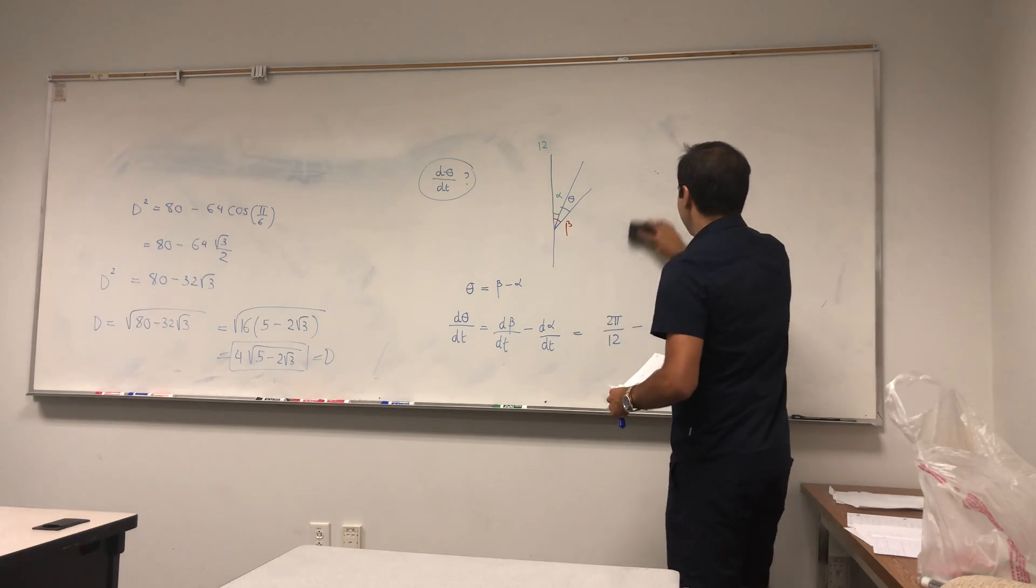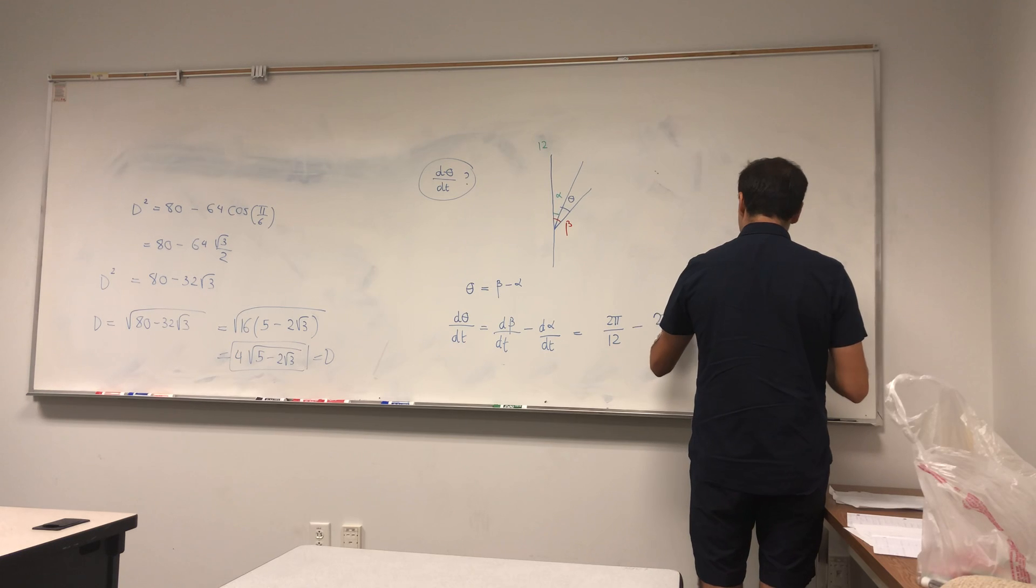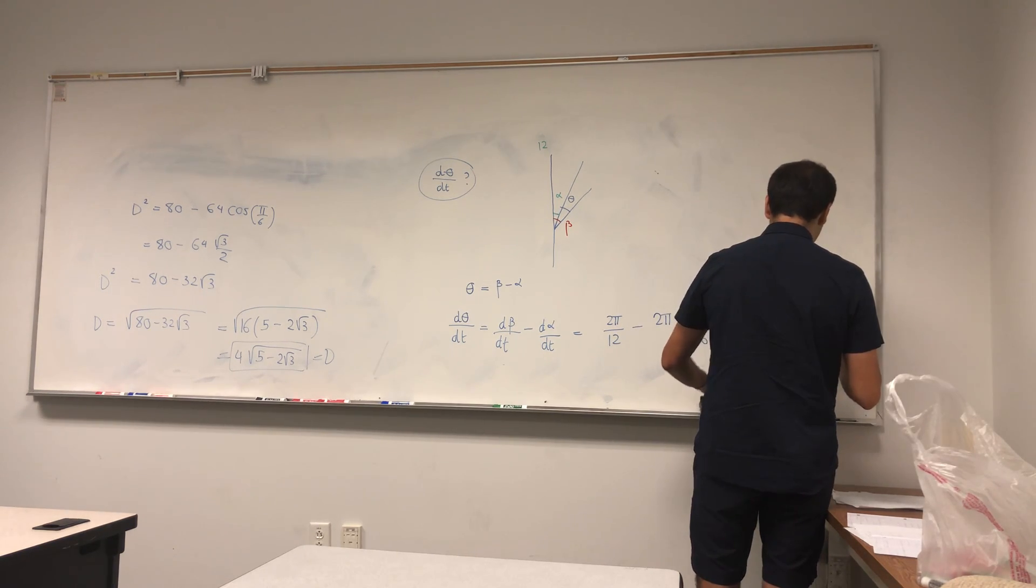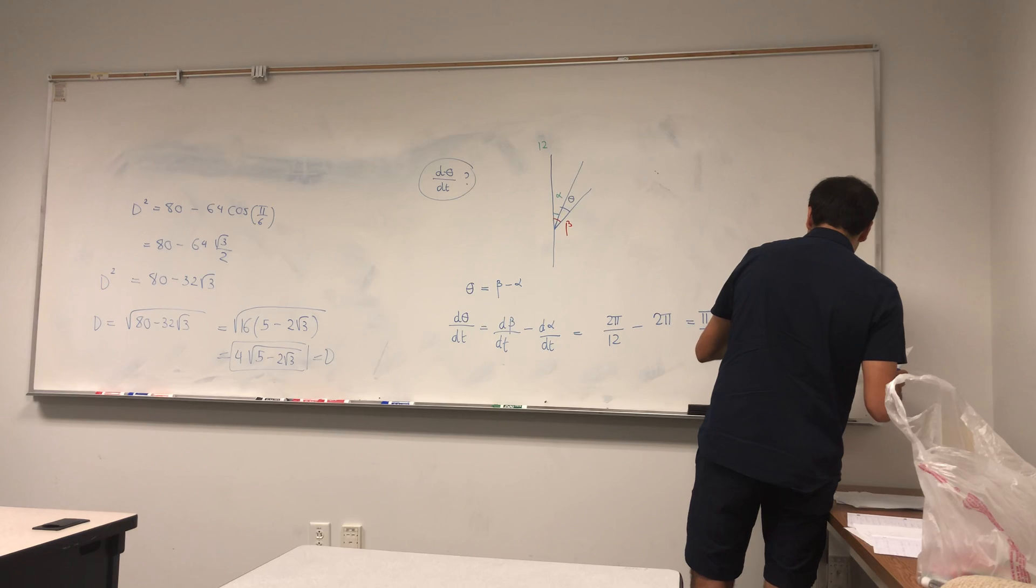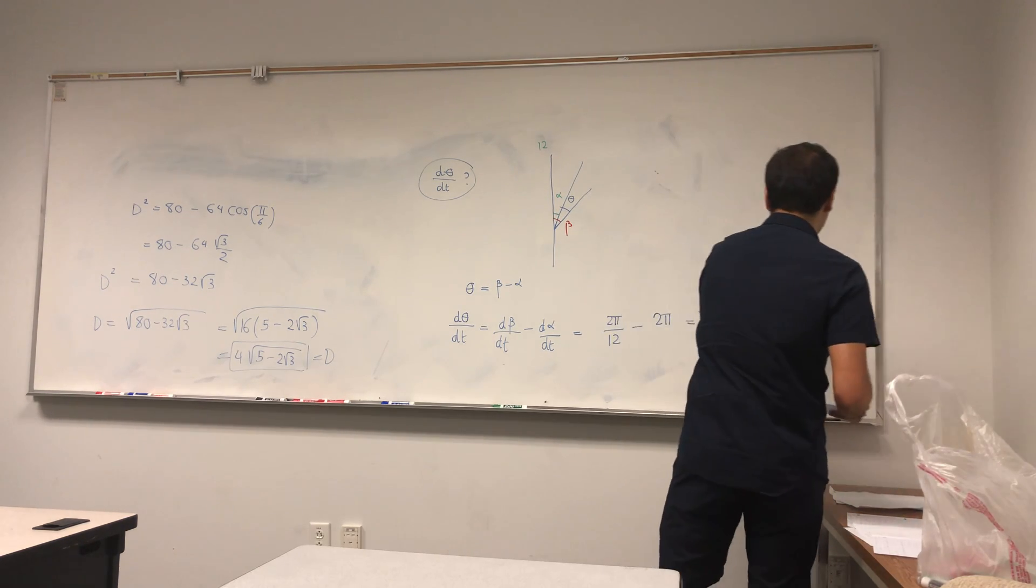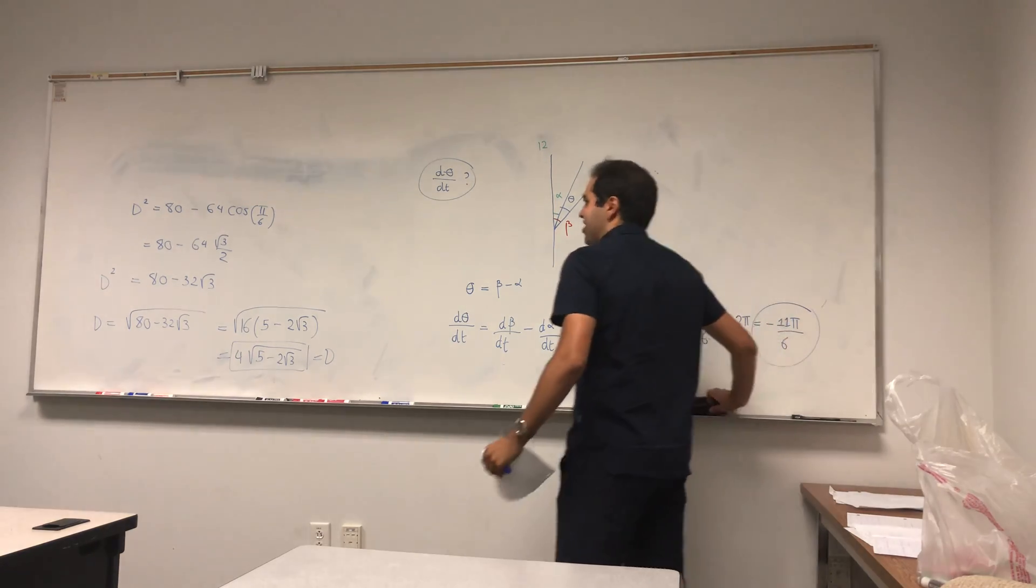Okay, good. And so now we have, if you want, 2 pi over 12 minus 2 pi. That's pi over 6 minus 2 pi, and that's minus 11 pi over 6. And let me write my ones nicer so it doesn't become like pi. Minus 11 pi over 6 millimeters per hour. And that's great.